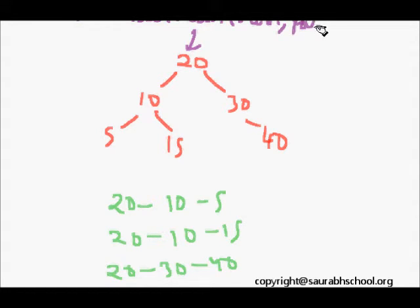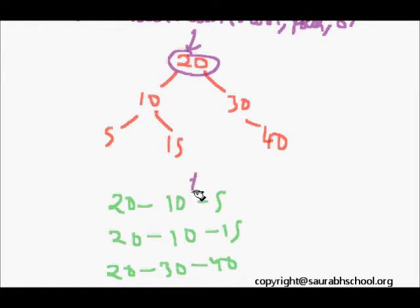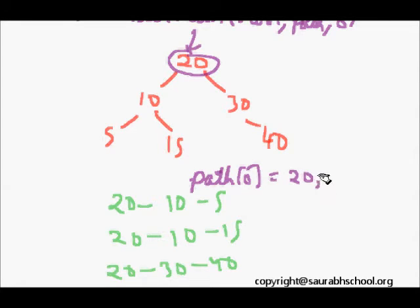Let's trace the execution. We call printPathRecursively with the root node and path length 0. The node is not null, so we set path[0] = 20. Then we check: is node->left and node->right both null? No, so we proceed to the else branch.